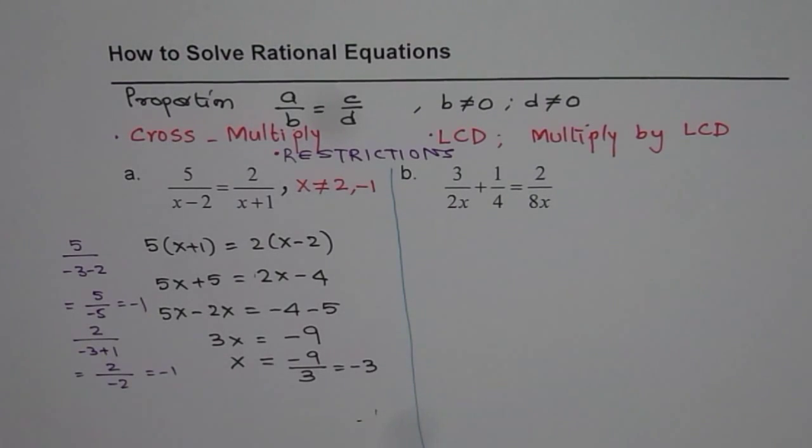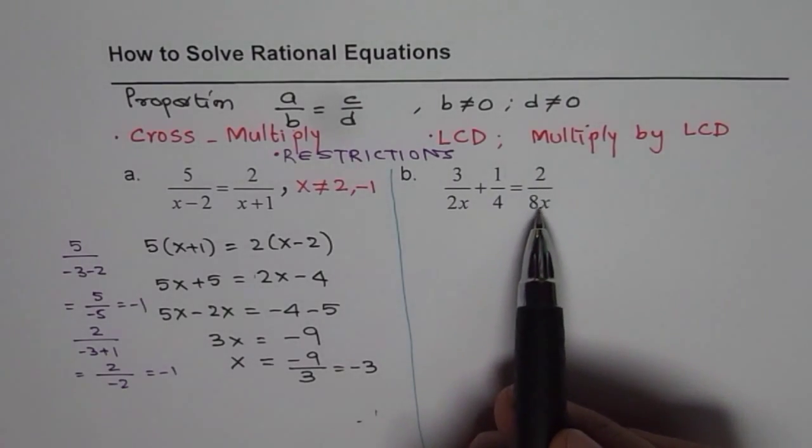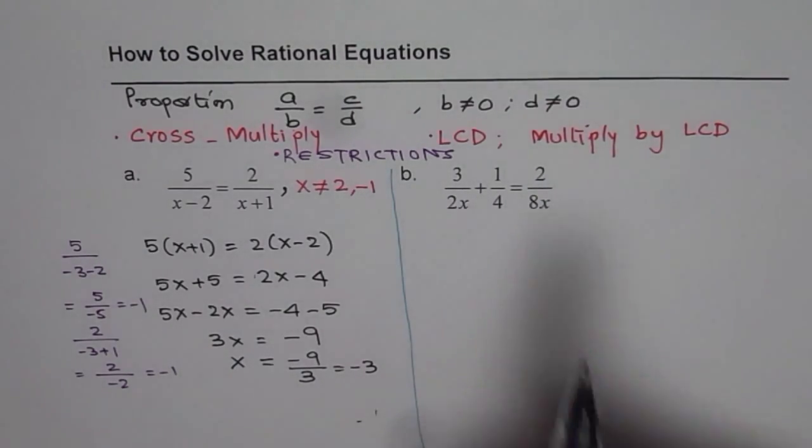Now the second equation is 3 over 2x plus 1 over 4 equals 2 over 8x. This is not like a proportion, it is not A over B equals to C over D. So here, find the lowest common denominator.